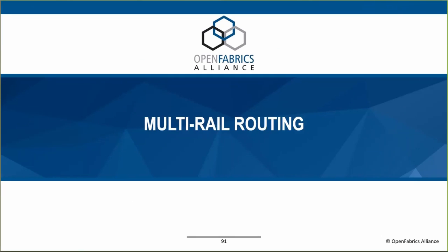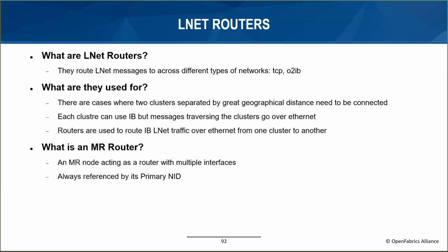With LNet multi-rail and health in place, it was time to return to the LNet routing infrastructure. LNet routers connect two wire-incompatible LNet networks together — for example, an LNet TCP virtual network and an o2ib virtual network cannot communicate directly and need a router. A practical example is clients in one geographical location and servers in another: clients go over Ethernet to the router, which then routes messages to the o2ib network the servers are on. Prior to multi-rail, if a gateway had multiple interfaces on the same network, each interface required its own route configured on the nodes. Multi-rail routing redesigned this to build upon the multi-rail infrastructure.